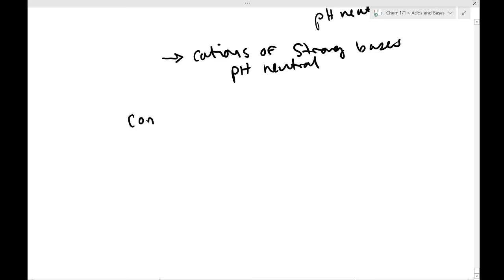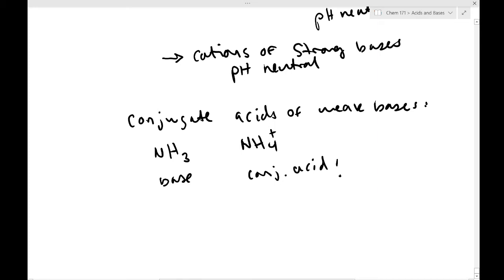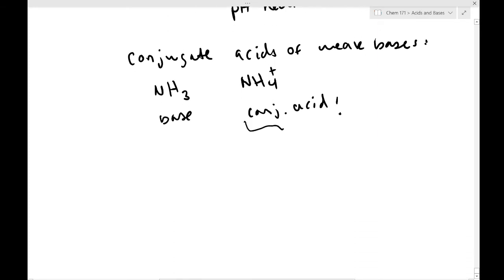Okay, so that means that the counter ions of strong bases are pH neutral. Just like the anions of strong acids are pH neutral. What about the conjugate acids of weak bases? Okay, the conjugate acids of weak bases. If we have, for example, ammonia, this is the base. Conjugate acid would be ammonium. Okay, and this is an acid. When we put ammonia, or ammonium, into a solution as part of an ionic salt, okay, it will lower the pH.